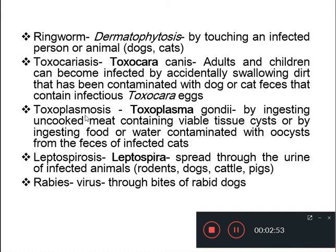The next disease is Toxoplasmosis, a protozoan disease caused by Toxoplasma gondii. This is spread to humans by ingesting uncooked meat containing viable tissue cysts, or by ingesting food or water contaminated with oocysts from the feces of infected cats.